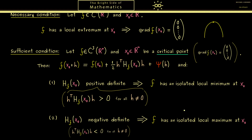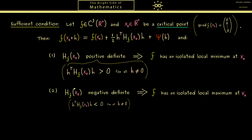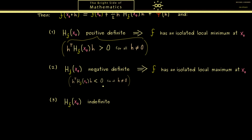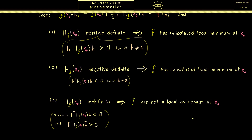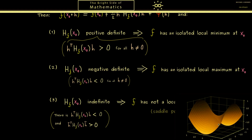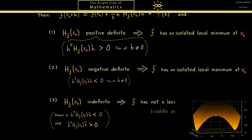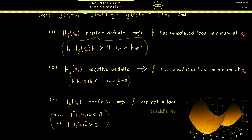We also get a nice conclusion if we are neither positive nor negative definite — this is what we call indefinite, meaning we find at least one h giving a positive outcome and one h giving a negative outcome. Since the approximation shows both behaviors depending on the direction, there is not a local extremum at x0. In fact, we have something called a saddle point. This can be nicely described with a function on R2 that looks like a maximum from one side and a minimum from another, so it has no local extremum at that point.